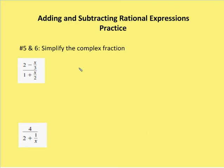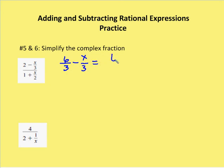Now I'm going to simplify a complex fraction. We're going to do the first problem, number 5, using method number 1, which I discussed in the lesson. That is to create a single fraction for both the numerator and the denominator. I find that my common factor in the numerator is going to be 3. So 2 is the same as 6 over 3, minus x over 3, which gives me (6 minus x) over 3.